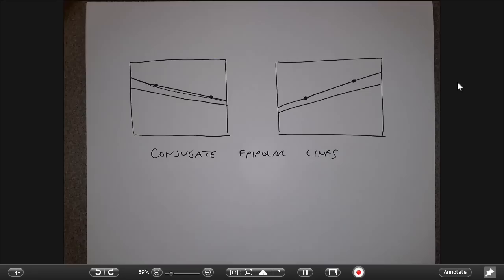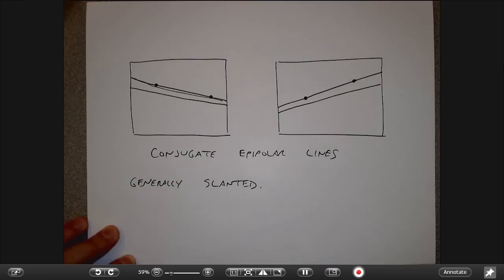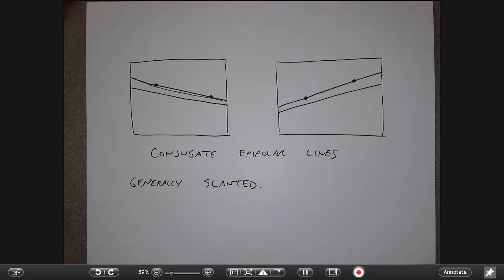One thing to notice is that I'm drawing these lines in a slanted way, and that really is how these lines typically look in an image — they don't look nice and horizontal. As a preview, life would be great if these lines actually were rows of the image, because then you could just process along rows finding correspondence row by row. That's something we want to do — a process called rectification — where once we know the slanted epipolar lines, we transform the images so the epipolar lines become horizontal.